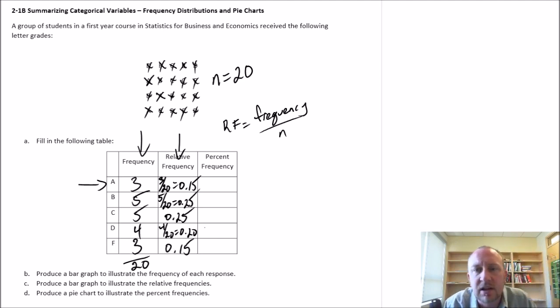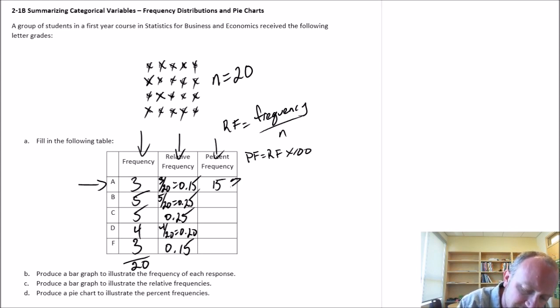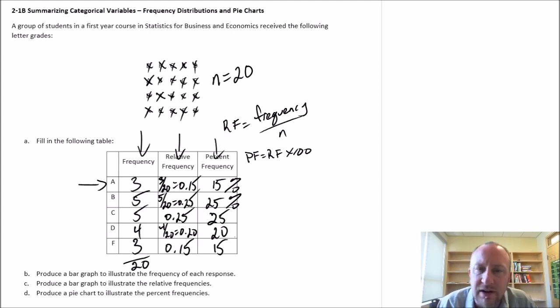Percent frequency is simply the relative frequency times 100. So this is now 15 percent, 25 percent, 25, 20, and 15. So now I can very easily look at this and say well 15 of my students received A's.